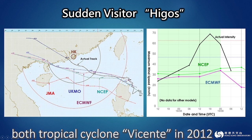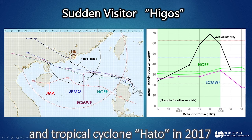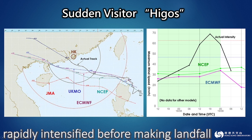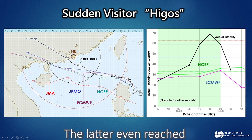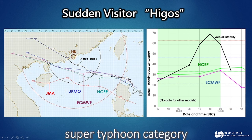In fact, both tropical cyclone Vicente in 2012 and tropical cyclone Hedo in 2017 rapidly intensified before making landfall on the coast of southern China. The latter even reached super typhoon category.